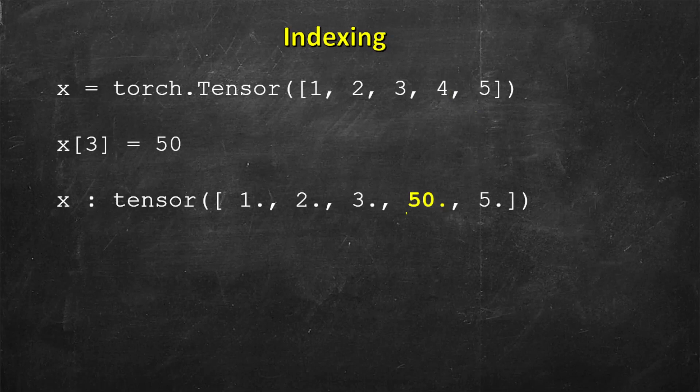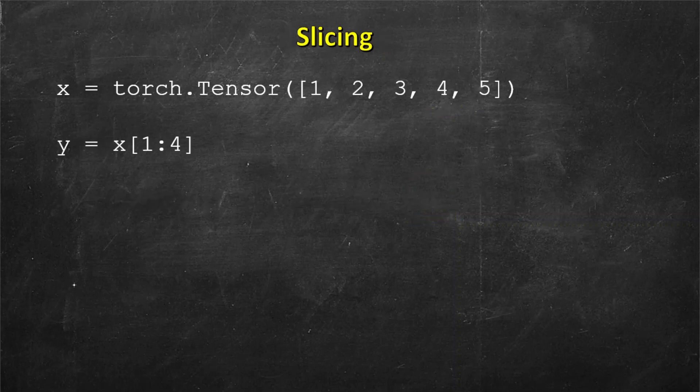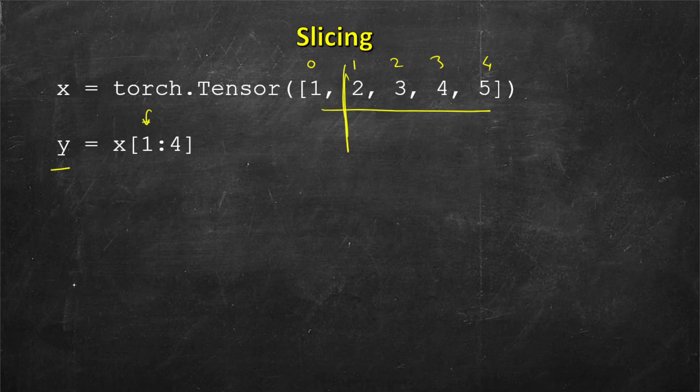Now let's see slicing. It's very similar to slicing in a normal Python list. Again we are taking the same tensor. If you create a small tensor out of it, this is index 0, this is 1, 2, 3, 4. First index is 1, so this index is included, so this slice starts here.